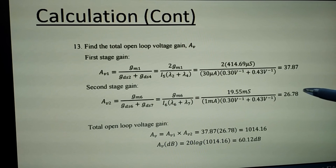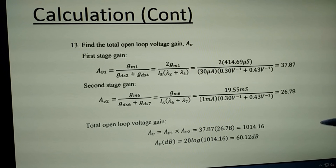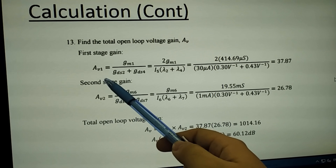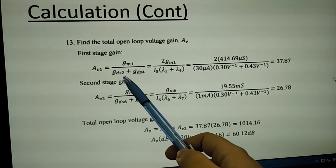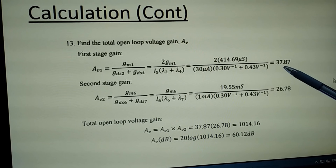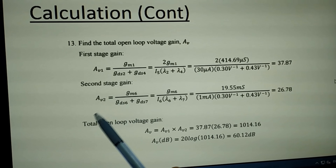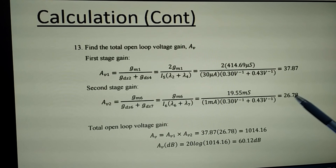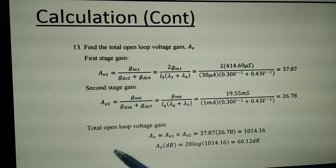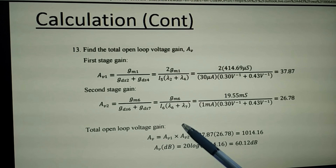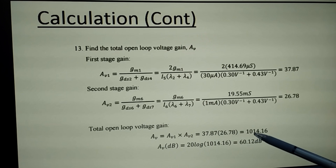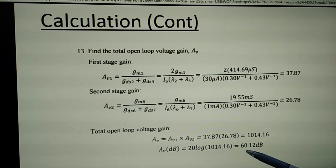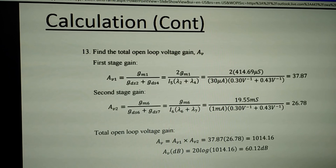To calculate the open-loop voltage gain AV: the first stage gain AV1 equals GM1 over (GDS2 plus GDS4), giving 37.87. The second stage is GM6 over (GDS6 plus GDS7), giving 26.78. The total gain is AV1 times AV2, which converts to 60.12 dB.